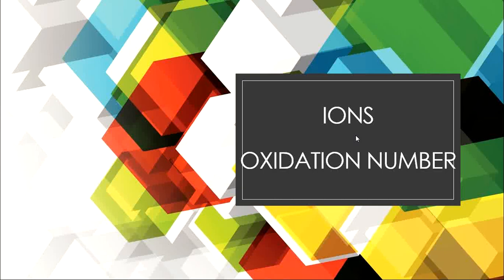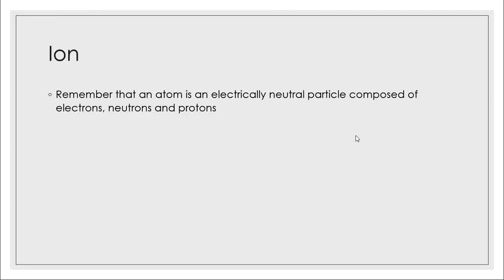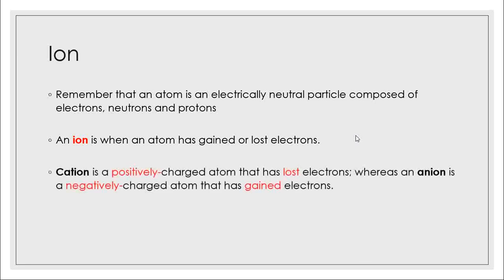In this video we're going back to ions and discussing their charges, more formally known as oxidation number. Remember that an atom is an electrically neutral particle composed of electrons, neutrons, and protons — so a neutral atom has a charge of zero. But an ion is an atom that gained or lost electrons. We know these ions as cations or anions: a cation is a positively charged atom that lost electrons, whereas an anion is a negatively charged atom that has gained electrons.